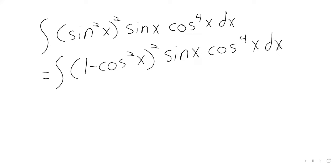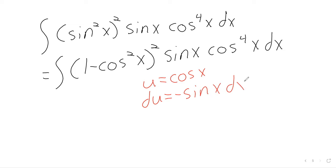Instead of worse and worse, this has been getting better and better for our purposes. Because at this point we can let u be the cosine of x, and our u-substitution will pass through without trouble. Again we're missing a negative sign, but missing negative signs isn't something we're unused to.